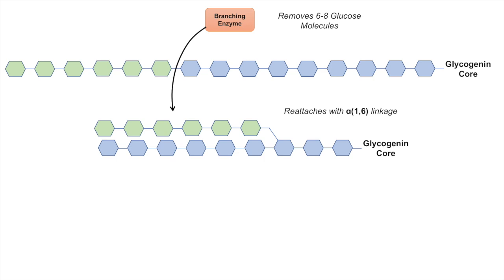Instead of having one chain with one free glucose at the end where only one can be removed at a time, now we have two points where two glucoses can be removed at a time. The branching of glycogen allows the cell to access more glucose quicker and faster — that's why it is actually a rapid source of glucose.